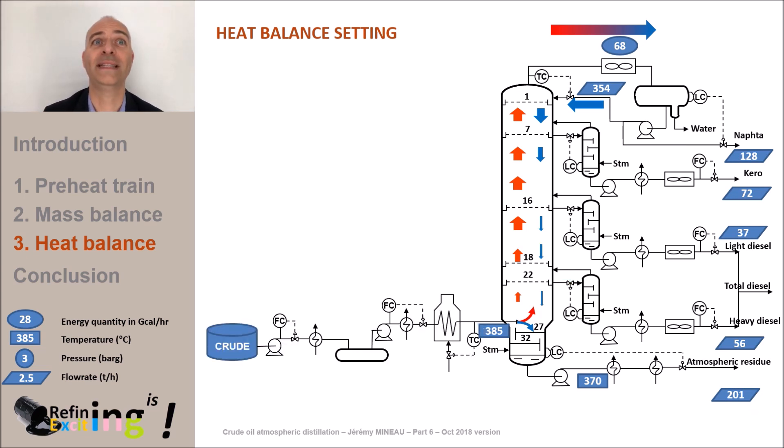The bottom pump around is typically at the same level as the heavy diesel. Heavy, unstripped diesel is withdrawn directly from the tray 22. This liquid is then cooled and re-injected into the column two or three trays above where it was withdrawn. This requires a pump around pump and one or more heat exchangers.